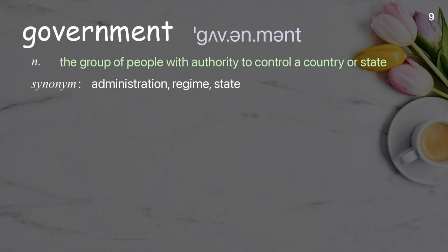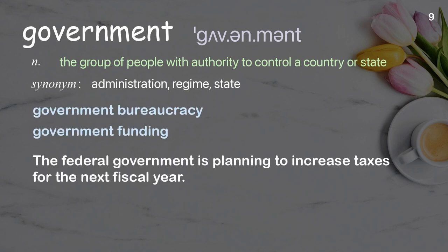Government: the group of people with authority to control a country or state. Examples: government bureaucracy; government funding. The federal government is planning to increase taxes for the next fiscal year.